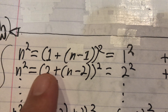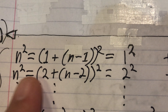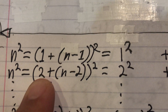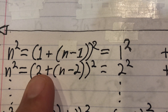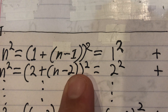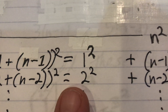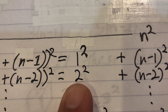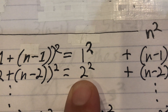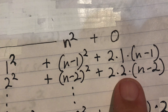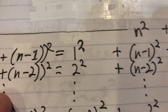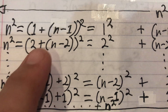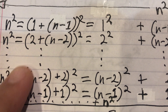Now we're going to do the same thing but start with subtracting two and adding two, then squaring it. We apply FOIL to this as well. You're probably thinking: where are we going with this?